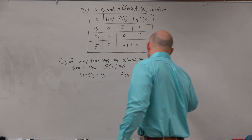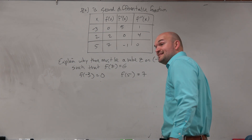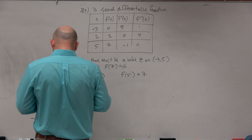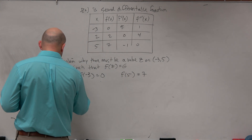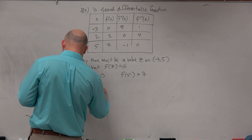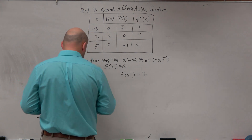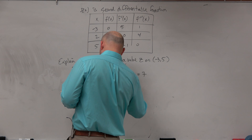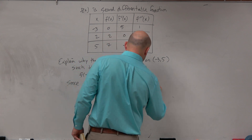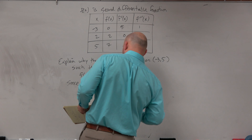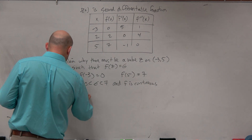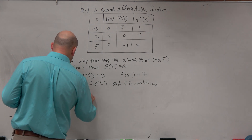So now let's write our justification. Again, this is an existence theorem, so we know we're going to be using the IVT. We could say: since 1 is less than 6, which is less than 7, and F is continuous on the closed interval negative 3 to 5...